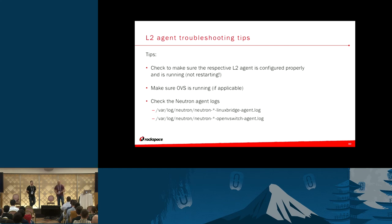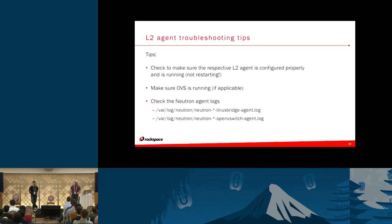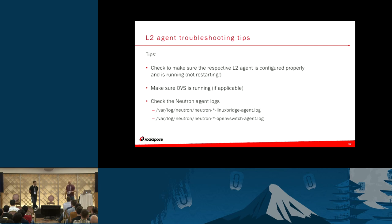When troubleshooting the L2 agent, make sure the respective L2 agent on the host is configured properly and is actually running — not in a constant restart loop. Upstart will continue to restart the service on failure, so you'll notice the PIDs are changing. Make sure Open vSwitch is running too — if OVS is not running on that host and you try to schedule an instance to it, you'll get an immediate failure. Agent logs are stored in /var/log/neutron/ on that host — for example, neutron/plugins/linux_bridge_agent.log.